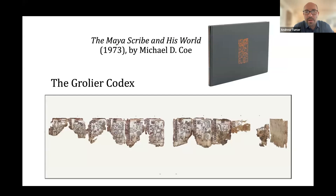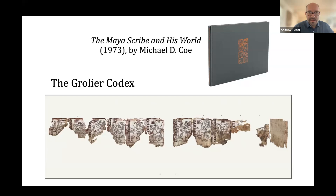That was all fine and good until 1973, when Michael Coe published basically an exhibition catalog for the Grolier show called 'The Maya Scribe and His World.' It included rollout drawings and photographs of vessels from the exhibition, but also contained a full facsimile of what was then known as the Grolier Codex — considered to be 11 pages at the time, with a couple of other scraps of blank paper. This basically tipped off the large controversy.